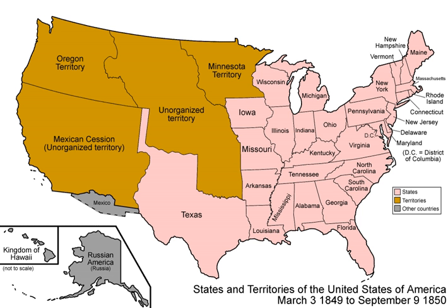Suspected slaves could neither ask for a jury trial nor testify on their own behalf. Any person aiding a runaway slave by providing food or shelter was to be subject to six months' imprisonment and a $1,000 fine. Officers capturing a fugitive slave were entitled to a fee for their work. In addition to federal officials, the ordinary citizens of free states could be summoned to join a posse and be required to assist in the capture, custody, and transportation of the alleged escaped slave. The law was so rigorously pro-slavery as to prohibit the admission of the testimony of a person accused of being an escaped slave into evidence at the judicial hearing. Thus, if a freedman were claimed to be an escaped slave, they could not resist their return to slavery by truthfully telling their own actual history.